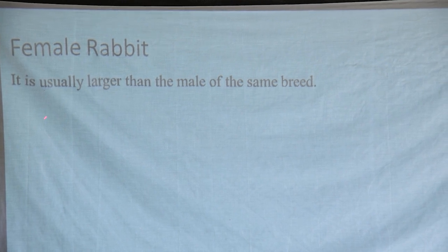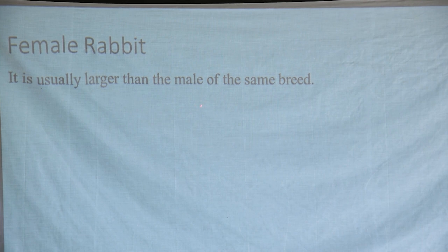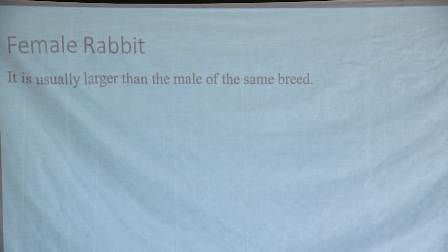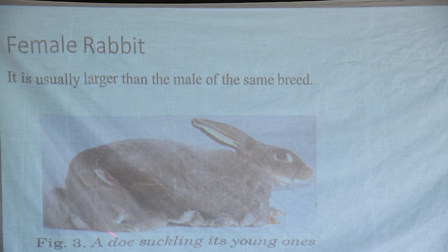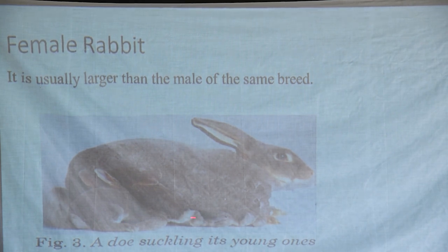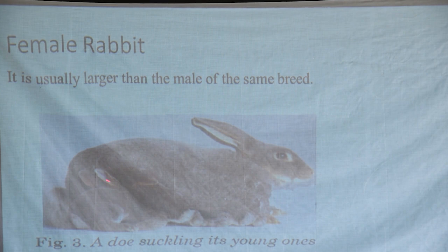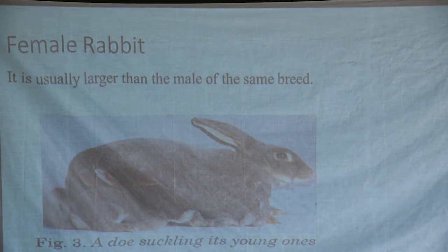Rabbits in our environment are very many. That's why you have to note. You have to check the male rabbits and female rabbits. A female rabbit is usually larger than the male rabbit of the same breed. So they can ask you to identify a female rabbit from a male rabbit. Simply say, a female rabbit is larger than a male rabbit if you compare in size. You can see in figure three — a doe is circling its young ones. You can see different rabbits of the same mother. This is a litter. The younger rabbit is called a bunny, a group will be a litter, and the female rabbit here is a doe. This is very important to note about rabbits.